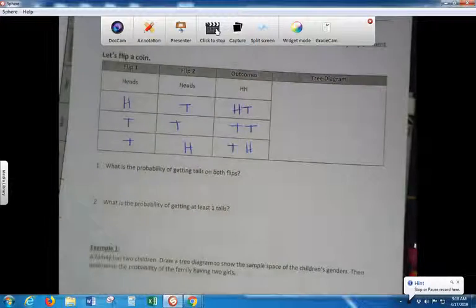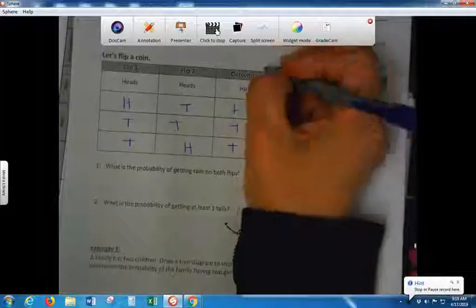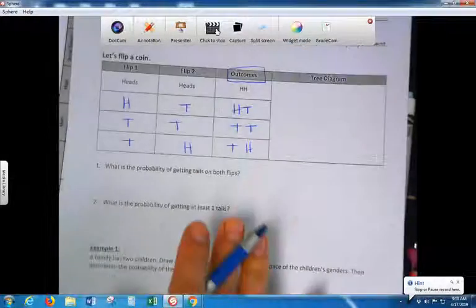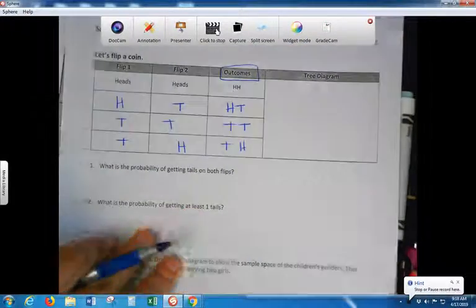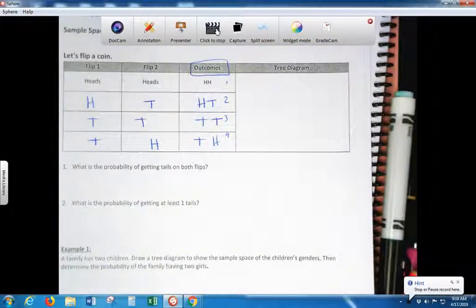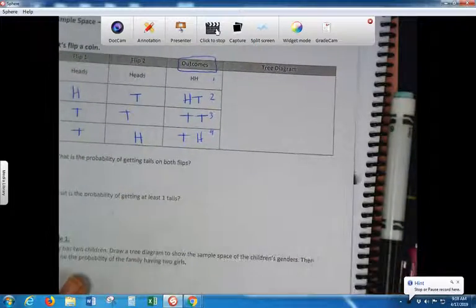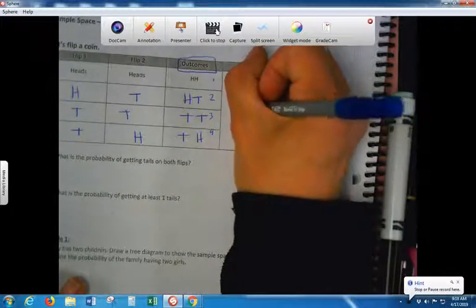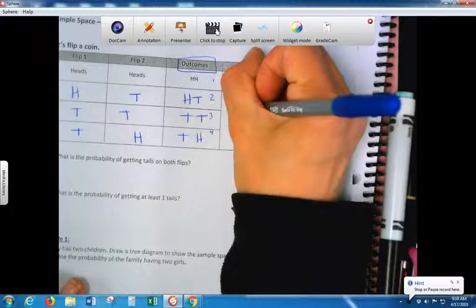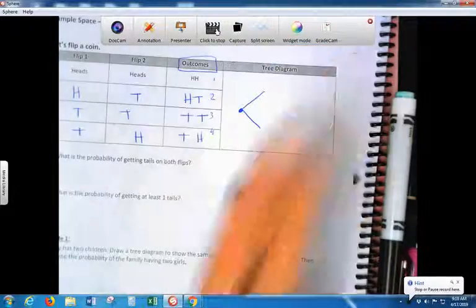So, how many different outcomes are there? Four. Here are your outcomes. Outcomes are your end product. I have four. One, two, three, four different outcomes. So, I'm going to draw a tree diagram with this information. So, this first branch of my tree represents my first toss. Represents my first toss.